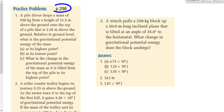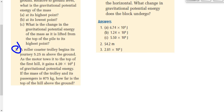We're taking a look at our homework on page 298, specifically questions 2 and 3. Question 2 said, a roller coaster trolley begins its journey 5.25 meters above the ground, and as the motor tows it to the top of the first hill, it gains 420,000 joules of gravitational potential energy. Here's the mass of the trolley and its passengers. How far is the top of the hill above the ground?